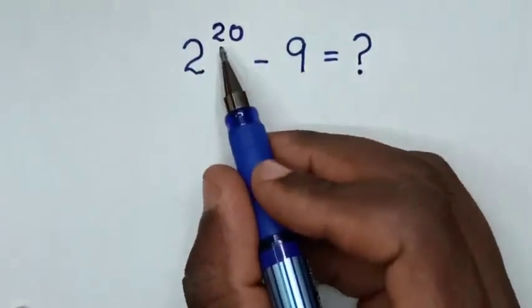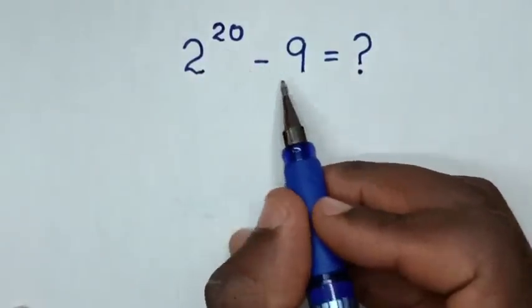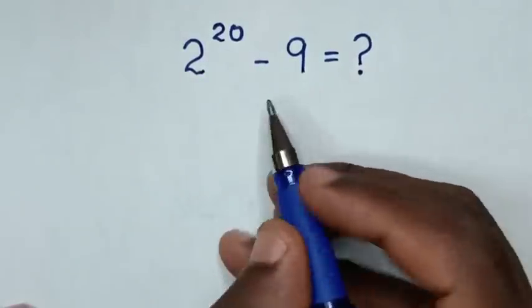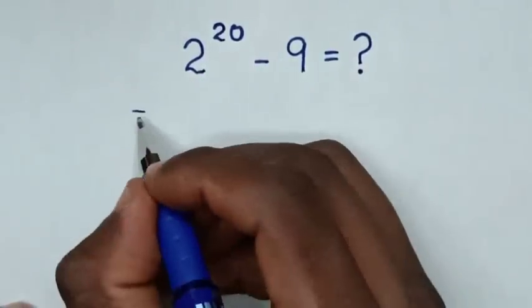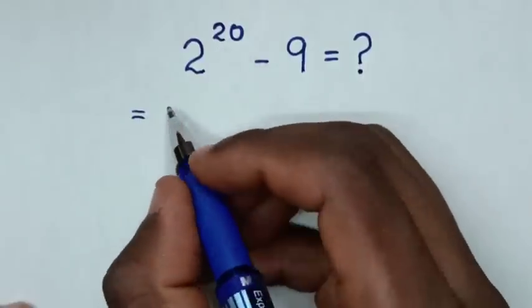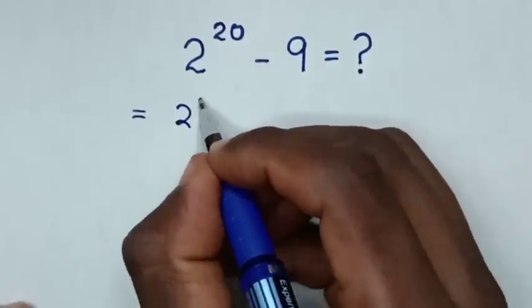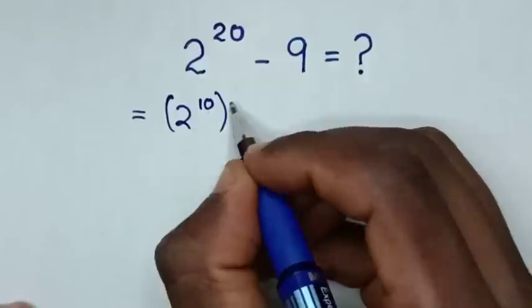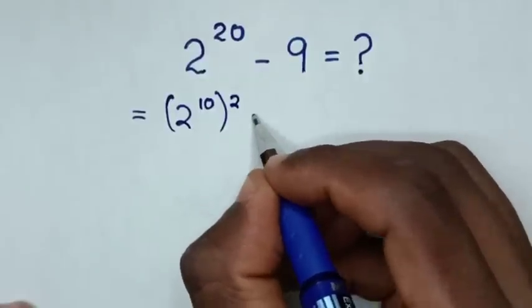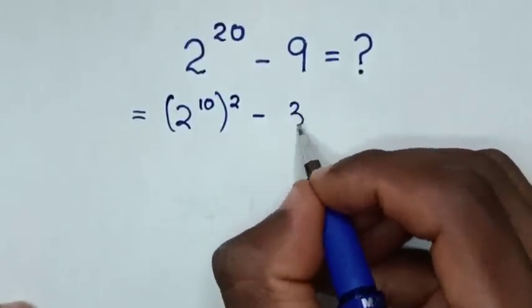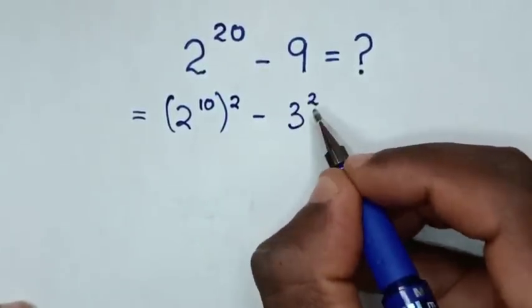How to solve 2 power 20 minus 9. So this will be equal to 2 power 20, where the square is the same as 2 power 10 bracket squared. Then minus 9, where the square is the same as 3 squared.